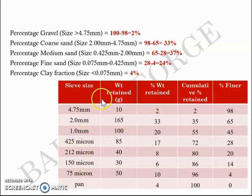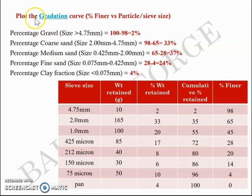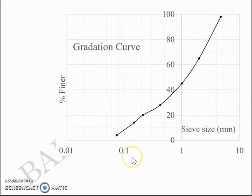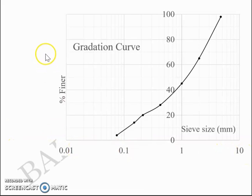Percentage finer versus sieve size, when plotted, will give you the gradation curve which helps classify a soil. The gradation curve is fundamentally a plot between sieve size in log scale and percentage finer in decimal scale. Now you need to get d10, d30, and d60 to get Cu and Cc.